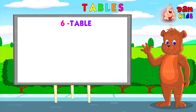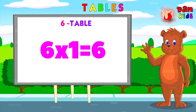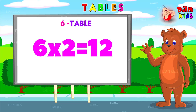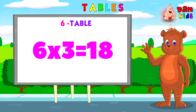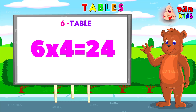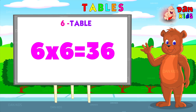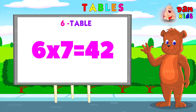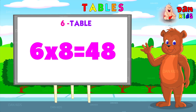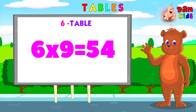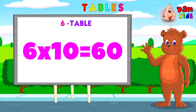Now the sixth table. Six ones are six. Six twos are twelve. Six threes are eighteen. Six fours are twenty-four. Six fives are thirty. Six sixes are thirty-six. Six sevens are forty-two. Six eights are forty-eight. Six nines are fifty-four. Six tens are sixty.